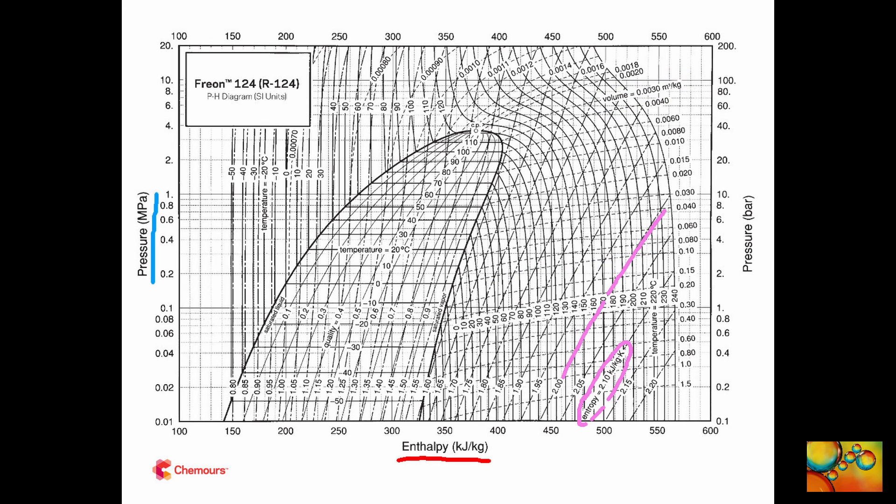Let's follow the line of 0.1 cubic meter per kilogram. We now turn our attention to lines of constant entropy. At the lower right hand side of the diagram, there is a line of entropy equal to 2.10 kilojoules per kilogram Kelvin. Again, this indicates that lines of similar shape will be isentropic lines. Let's follow the isentropic line of 2 kilojoules per kilogram Kelvin.